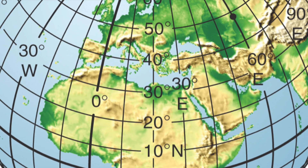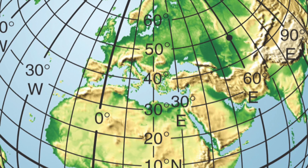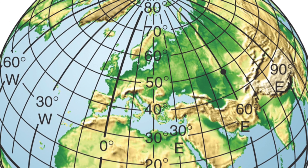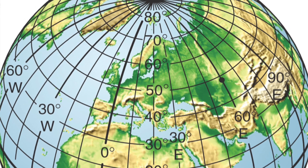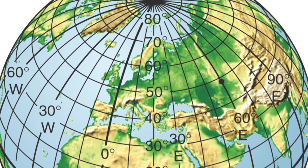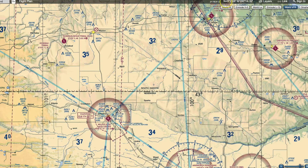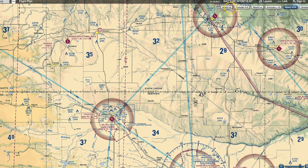Think of it this way: latitude lines are laying flat on the map, while longitude lines go the long way across the globe. We have 360 degrees around longitudinally, and 90 degrees of latitude starting at the equator at zero, going up to the north pole at 90 degrees, and down to the south pole at 90 degrees as well. Since we're north of the equator, everything in the US will be north.